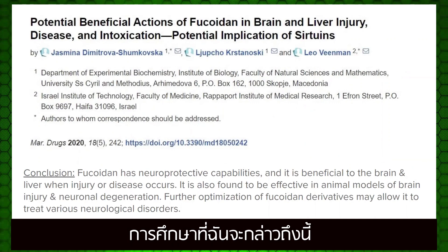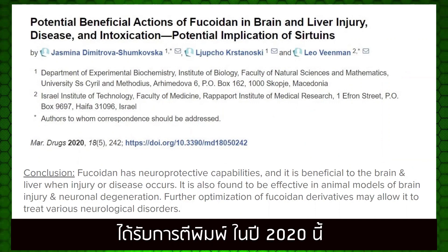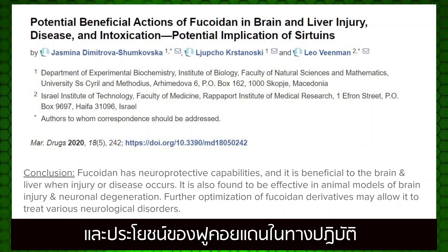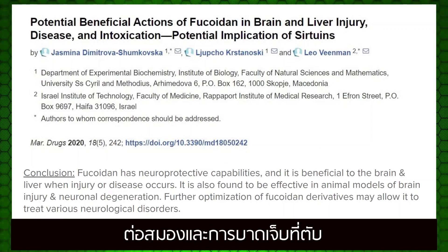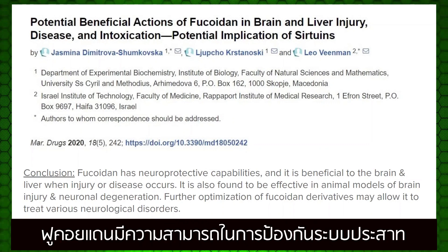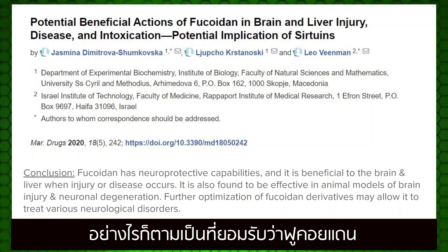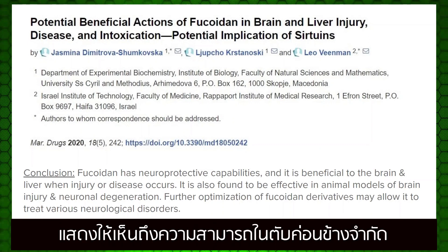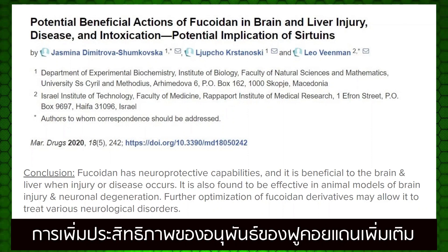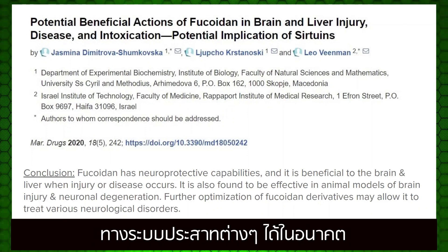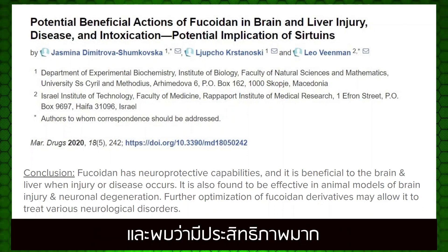The study I will be talking about was published in 2020, and it covers the potential beneficial actions of Fucoidan in brain and liver injury, disease, and intoxication. The conclusion reached was that Fucoidan does have neuroprotective capabilities and is beneficial to the brain and liver when injury or disease occurs. However, Fucoidan shows somewhat limited potency in the liver. Further optimization of Fucoidan derivatives may allow it to treat various neurological disorders in the future, and it was found to be very effective in animal models of brain injury and neuronal degeneration.